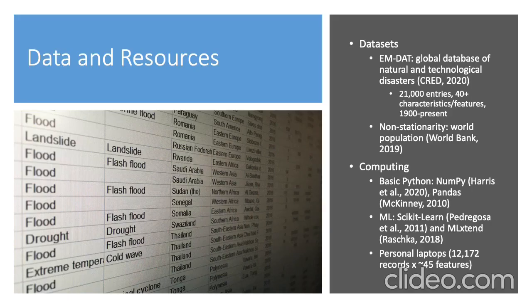We have two datasets that we're going to use. The first is MDAT, a global database of natural and technological disasters. There are about 21,000 entries, 40-plus characteristics or features, and it spans the year 1900 to the present. One thing we noted initially is there's a lot of non-stationarity in this. Disasters are getting more expensive over time, and one way we can correct for that is to also include world population as an extra feature, which comes from the World Bank. On the computing side, we're using basic Python packages like NumPy and Pandas, and machine learning-specific ones like scikit-learn and ml-extend, running on our personal laptops.